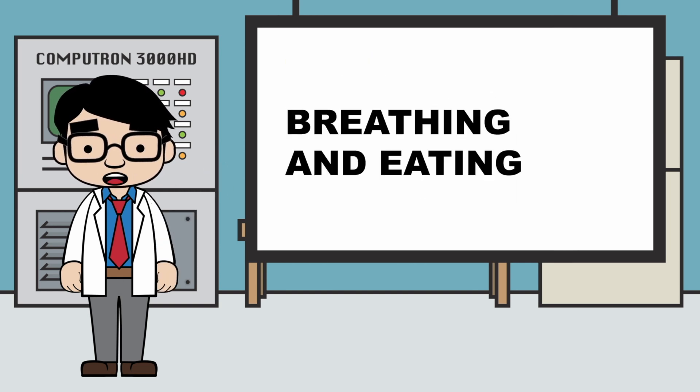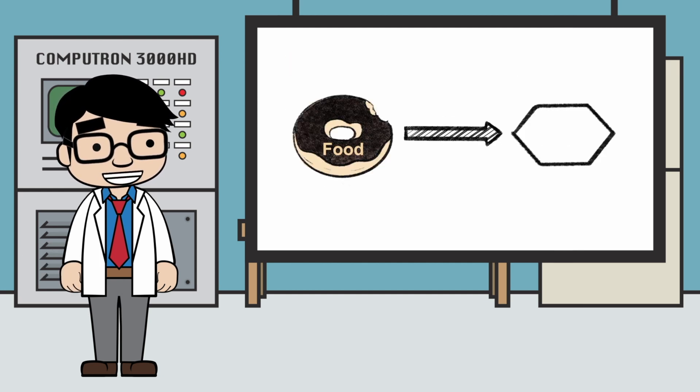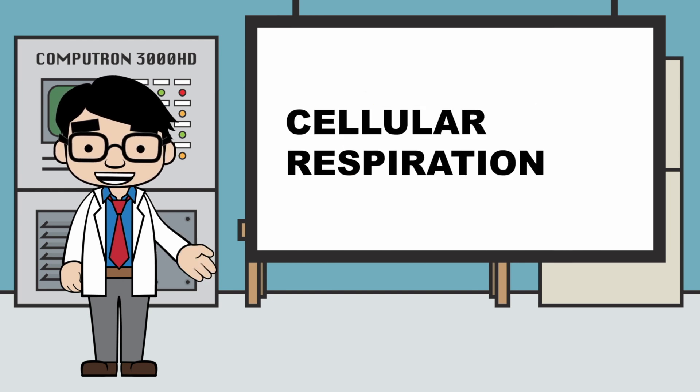Breathing and eating is important for getting the reactants to do cellular respiration. By inhaling air, we get oxygen. And by eating food, we get sugar. With these two things, cellular respiration can begin.